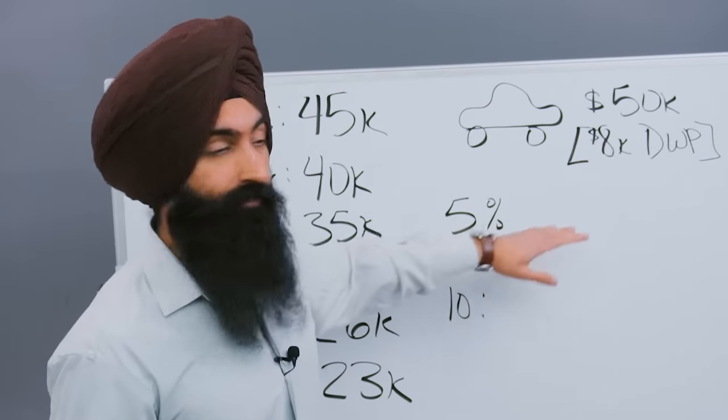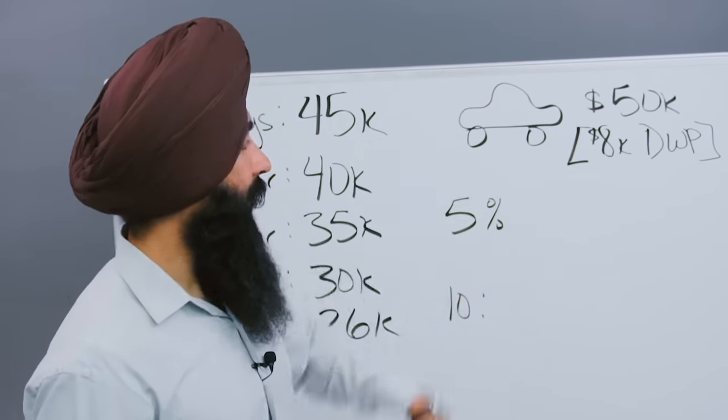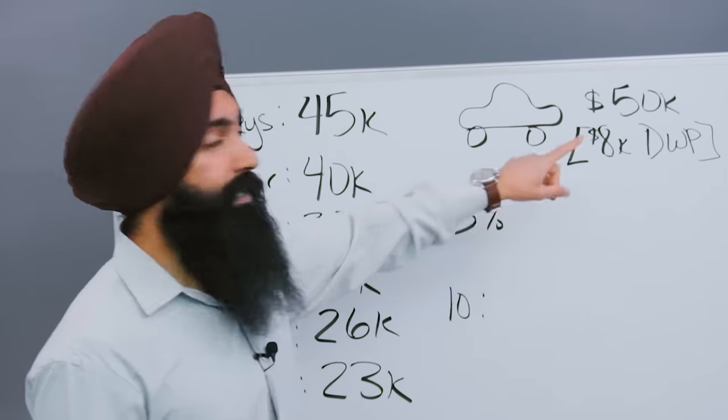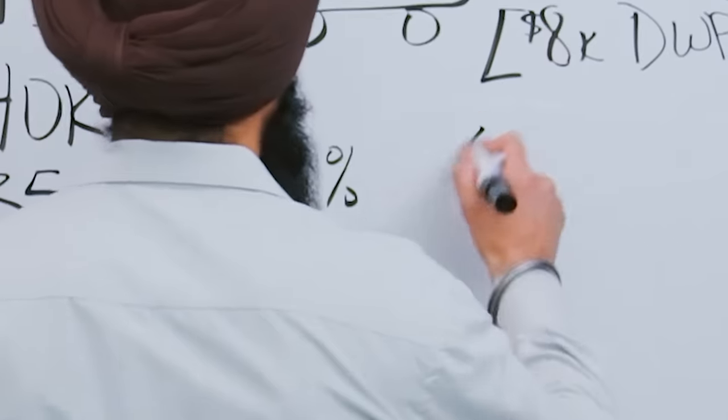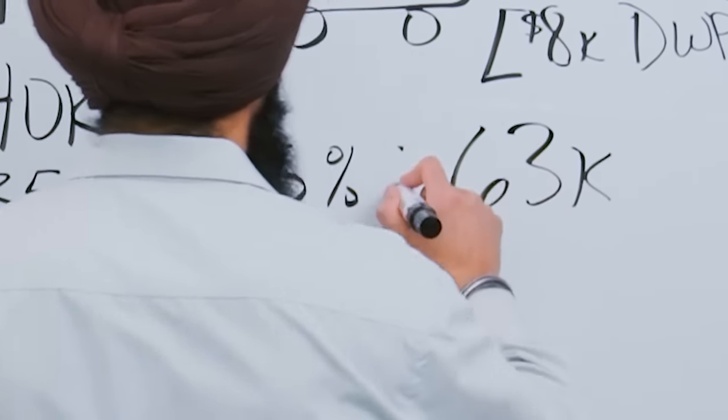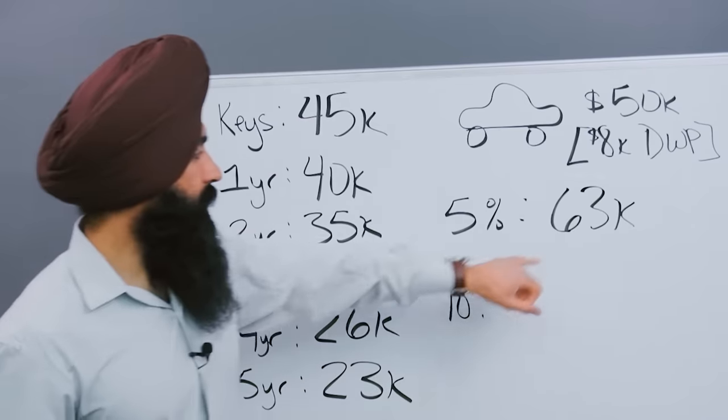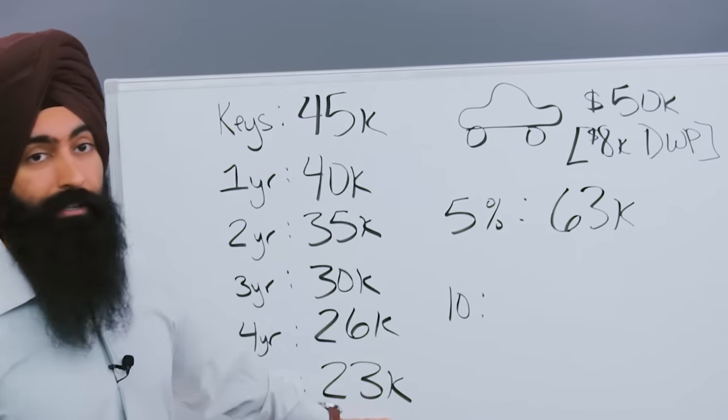Let me wipe this off and show you. If you were to go out and finance this other $42,000 at a 5% interest rate, after your car taxes, fees, and interest, it's going to cost you $63,000 over the course of five years to pay off this car, which is now worth $23,000.